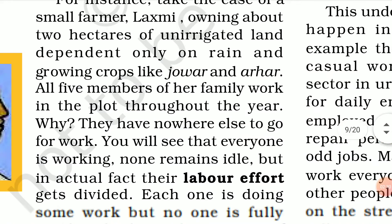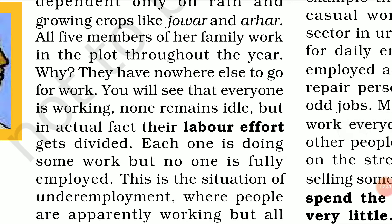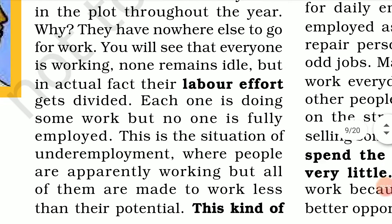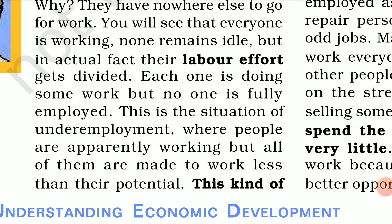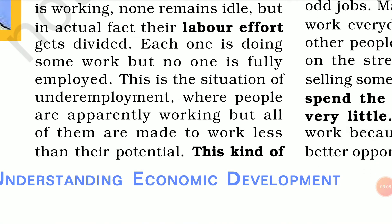For instance, take the case of small farmer Lakshmi owning about two hectares of unirrigated land, depending only on rain and growing crops like jowar and arhar. All five members of her family work in the plot throughout the year because they have nowhere else to go for work. You will see that none remains idle, but in actual fact, these labor efforts get divided. Each one is doing some work, but no one is fully employed.